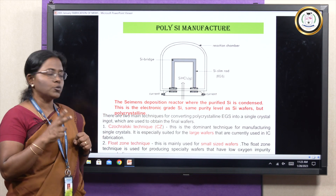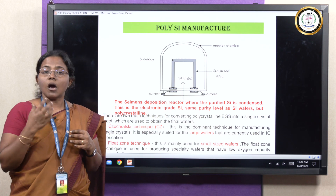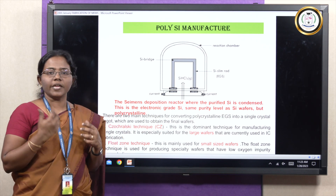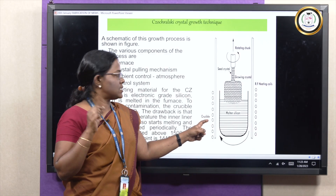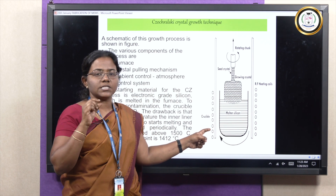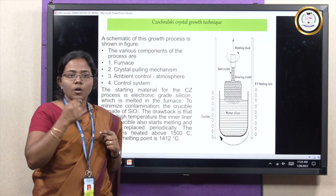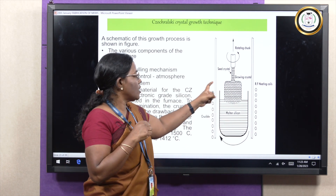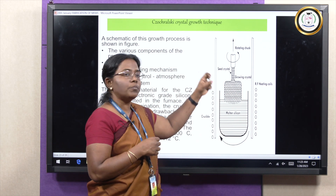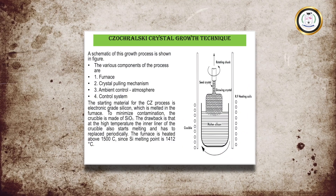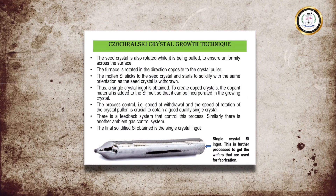Pure silicon can be extracted using two techniques: the CZ technique and the float zone technique. In the CZ technique, we can obtain large wafers. In the float zone technique, we can get small-sized wafers. In the CZ technique, molten electronic grade silicon is kept in a furnace coated with silicon dioxide which is rotating. A seed crystal is hanged inside the molten silicon. Due to the heat, the silicon gets melted and deposited over the seed crystal, and it can be pulled out in a cylindrical shape. Silicon melts at 1412 degrees C. This silicon ingot is obtained from the CZ technique and is further processed to get wafers.